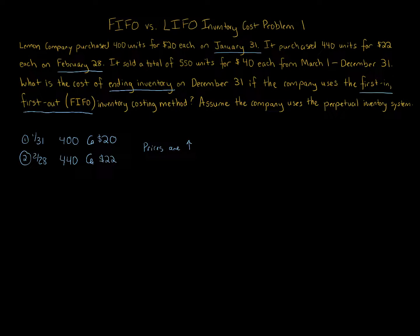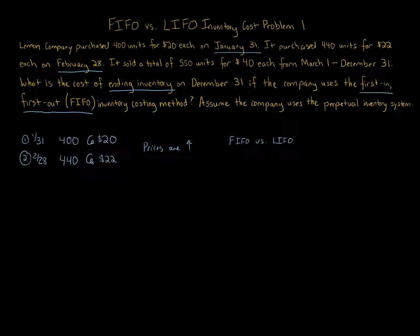When prices are increasing, you can explain to a client or answer on an exam what the general trend means for ending inventory under FIFO versus LIFO. For conceptual questions, you can always use simple numbers — like $1 and $2 for increasing prices, or $2 and $1 for decreasing — and plug them in. That's why FIFO versus LIFO questions are students' best friends on exams: you can answer both conceptual and calculation-based questions using numbers.